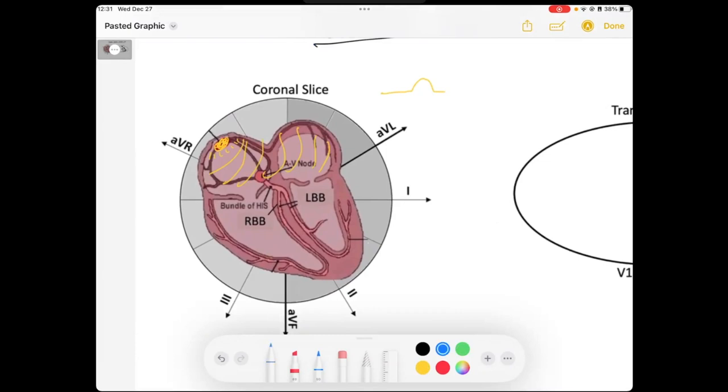The AV node is going to capture that signal. It's going to then, in 120 to 200 milliseconds, distribute that down into the ventricles, creating our QRS, and then we have our nice T wave.